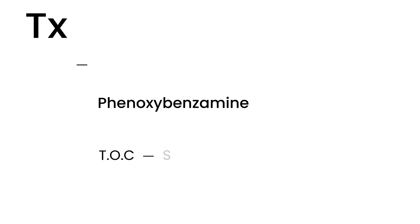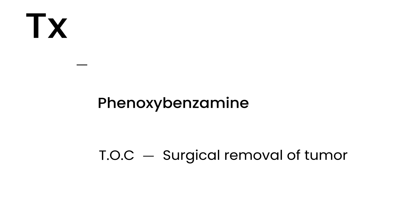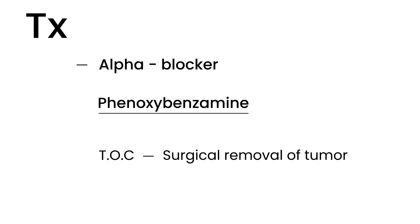For treatment, there are two things. The treatment of choice is surgical removal of the tumor. Before you do that, you want to stabilize the patient with an alpha blocker, and that alpha blocker is phenoxybenzamine. This helps to control the hypertension.